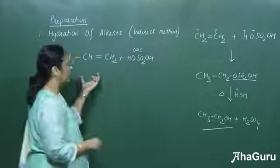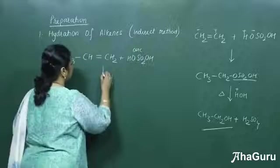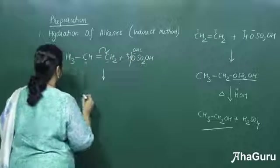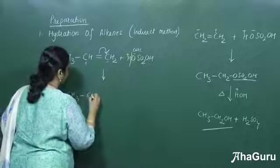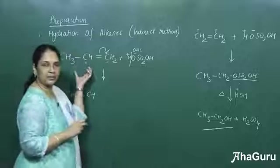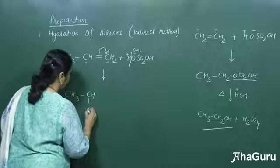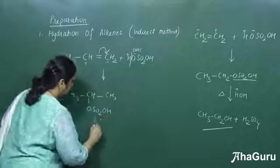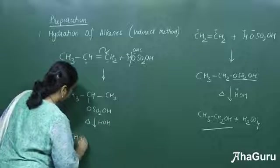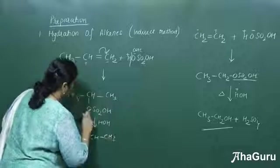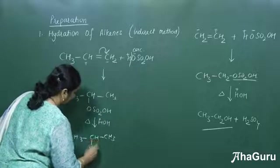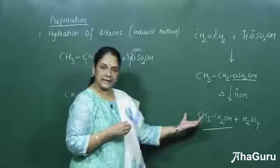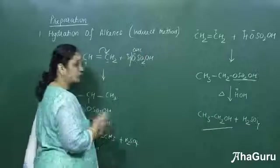For an unsymmetrical alkene with sulfuric acid addition, the negative part (OSO₂OH) always gets added to the carbon having fewer hydrogens, as per Markovnikov's rule — giving CH₃CH(OSO₂OH)CH₃. Followed by hydrolysis with H₂O and heat, we get CH₃CHOHCH₃ plus H₂SO₄. Only ethanol can be prepared as a primary alcohol by this method, since we must follow Markovnikov's rule.